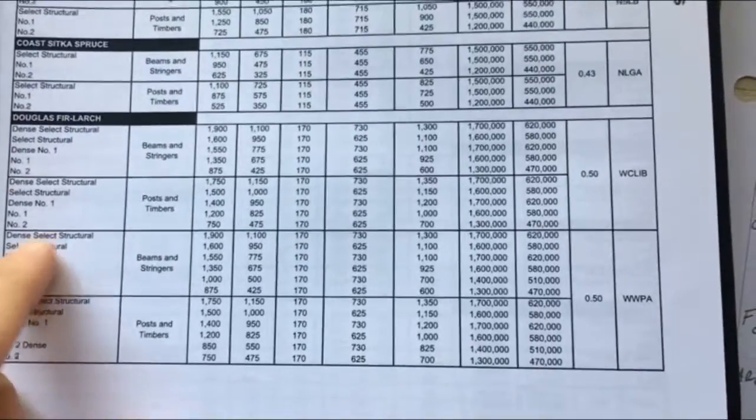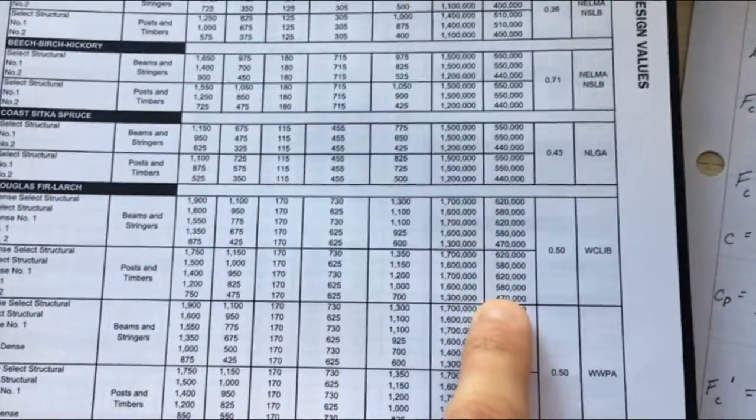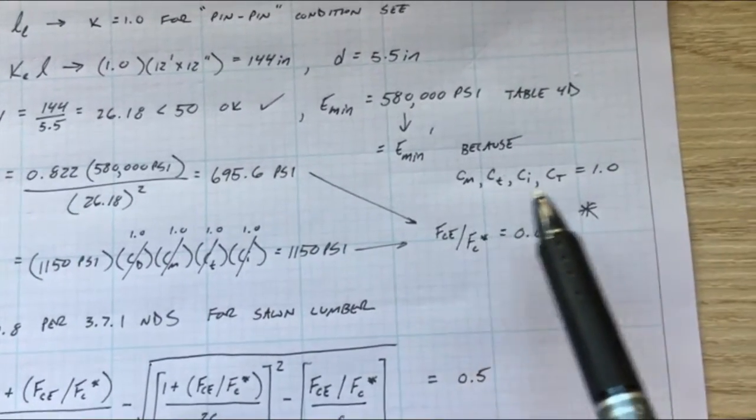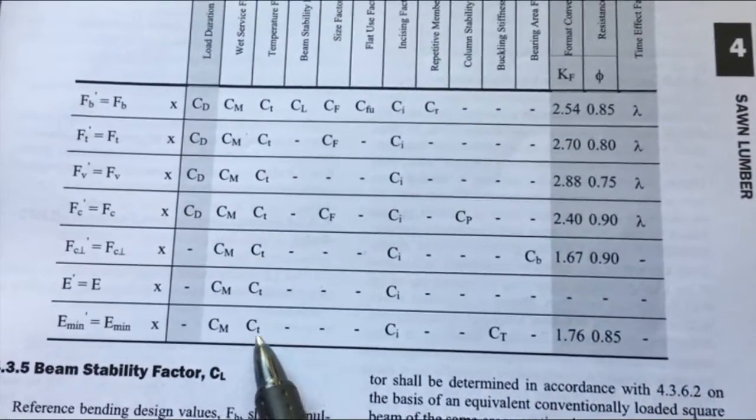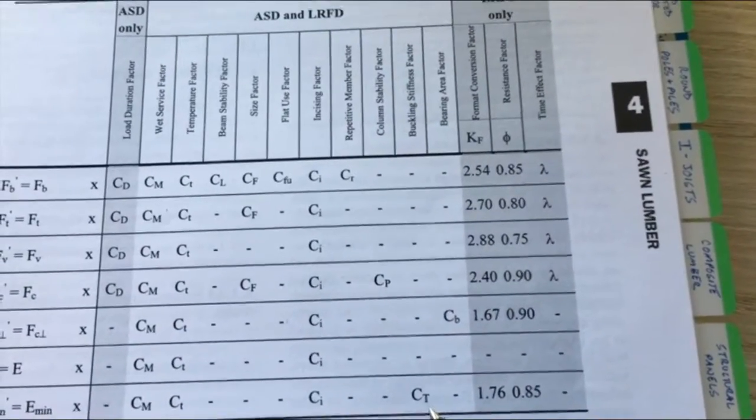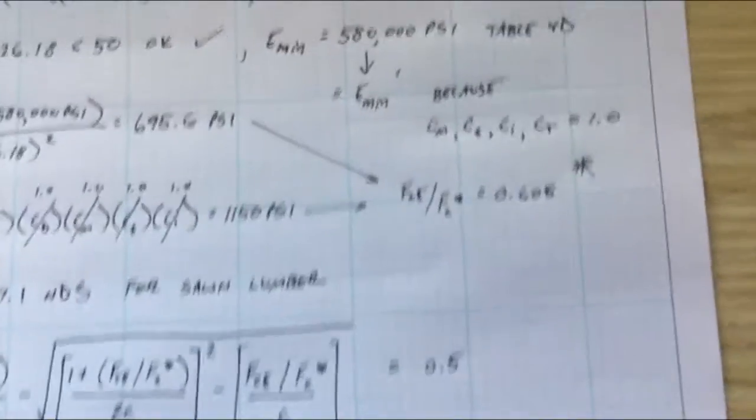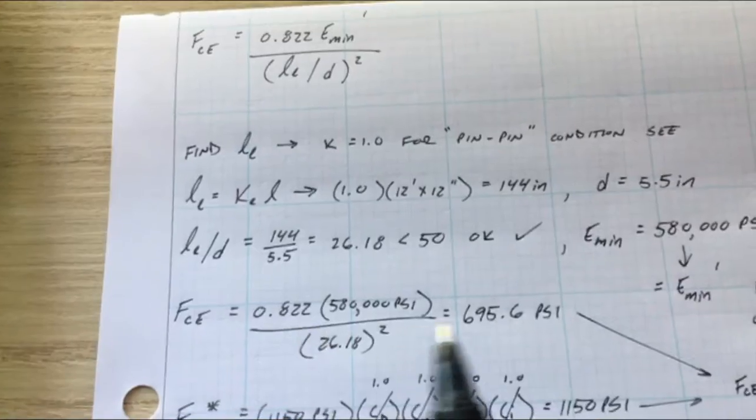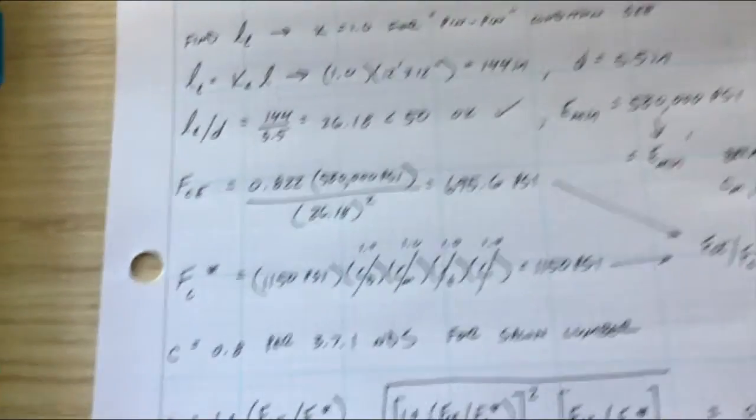E min, it's a process here. You go back to your supplement and you go to your Doug Fir and you go to your post select structural and you go to your E min. We come down, that's 580,000 PSI. So that we're gonna take and we are going to apply all of our factors that it told us, which is again back over here in chapter four. CM is moisture, t is temperature, those are both 1.0. Incising was 1.0 and C capital T is buckling stiffness factor, that's just for trusses though so that's also 1.0. So E min prime just equals E min in this case, so good, that also makes it easy.